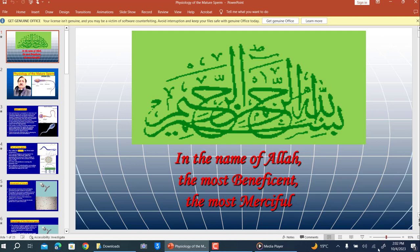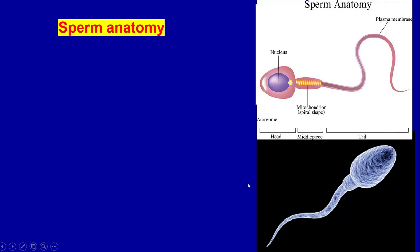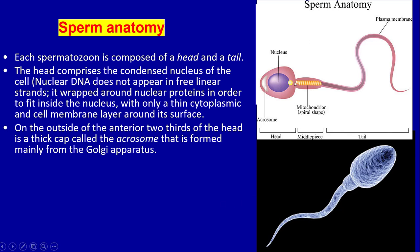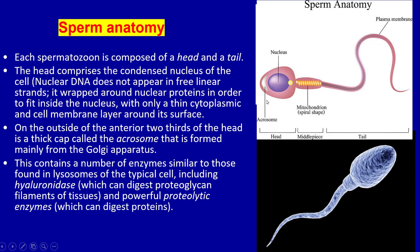In today's lecture I will discuss physiology of the mature sperm and sperm anatomy. Each spermatozoa is composed of a head and a tail. The head comprises the condensed nucleus of the cell. Nuclear DNA does not appear in free linear strands; it wraps around nuclear proteins in order to fit inside the nucleus, with only a thin cytoplasmic and cell membrane layer around its surface.